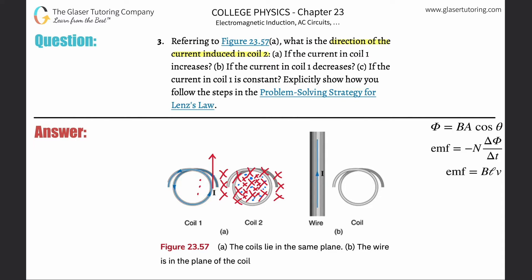We're essentially reverse engineering it. In order to have an increasing magnetic field pointing out of the loop, we add dots here. The question is: what direction should the current flow — clockwise or counterclockwise? You can use right-hand rule number two to help identify this; your fingers must be curling inside.